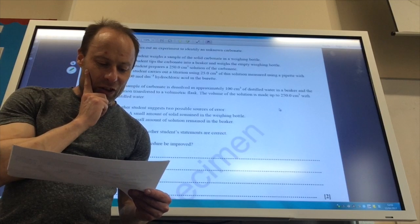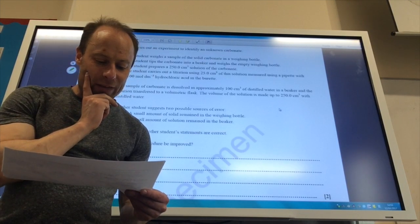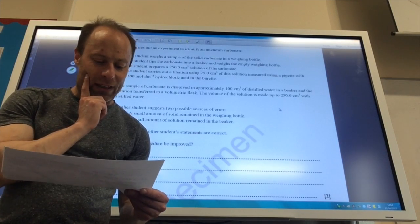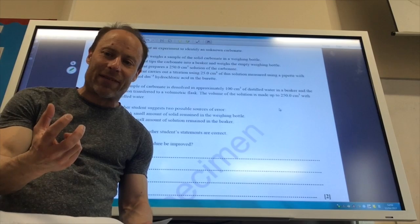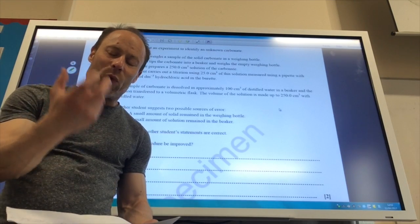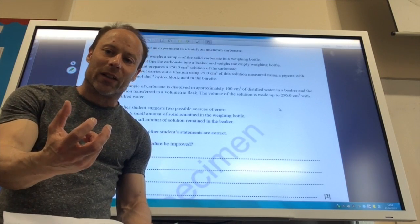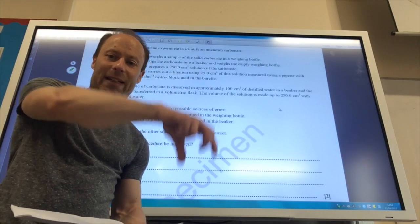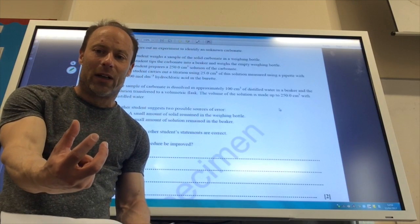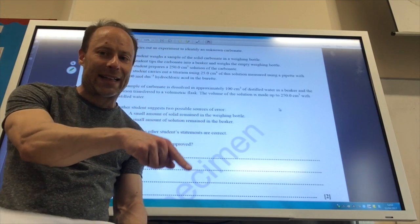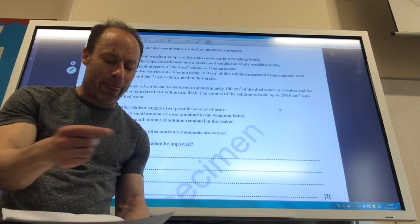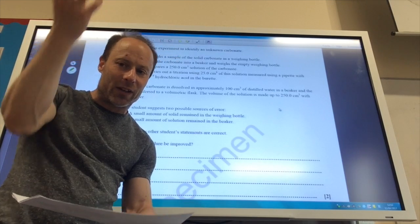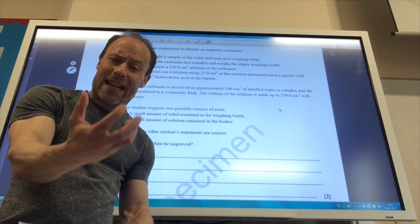Another student suggests two possible sources of error. A small amount of solid remains in the weighing bottle and a small amount of the solution remains in the beaker. Does it matter? It doesn't matter that a bit of solid is left in the weighing bottle because I weighed the weighing bottle before and after, so I know exactly how much was added into the beaker.